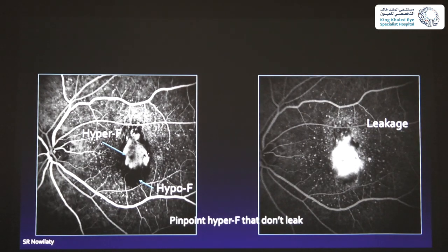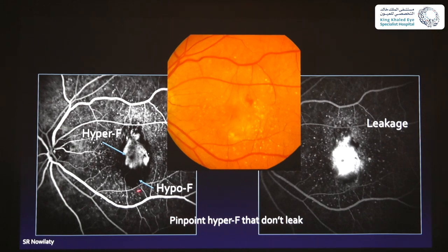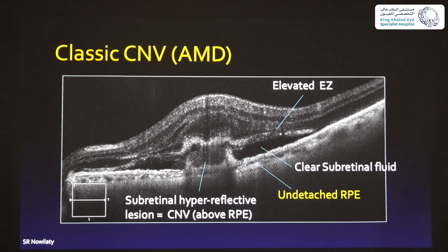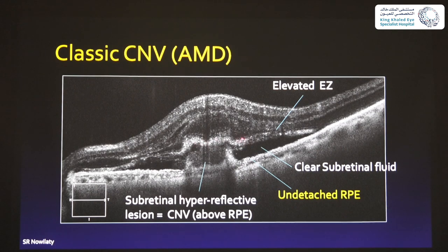On fluorescein angiography, a classic type 2 membrane shows early hyperfluorescence with late leakage. On OCT, you can see something going through the RPE — the ellipsoid zone is disrupted, there is clear subretinal fluid, an intact but bridged RPE, and a hyperreflective structure between the RPE and the neurosensory retina. The best approach is to try to follow the ellipsoid zone and the external limiting membrane — where they're disrupted is where the membrane has crossed the RPE. You have elevated ellipsoid zone, clear subretinal fluid, and a hyperreflective CNV structure.